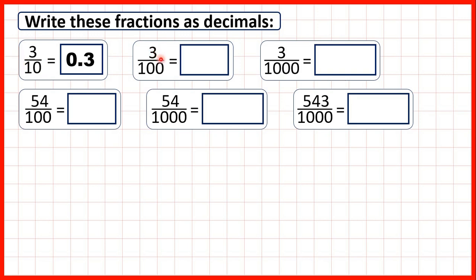Three hundredths is written as a decimal as 0.03. That's because the second digit after the decimal point is the hundredths digit and we have three hundredths. So we need a zero in our ones but also in our tenths, to show that the three is in the hundredths place value column.